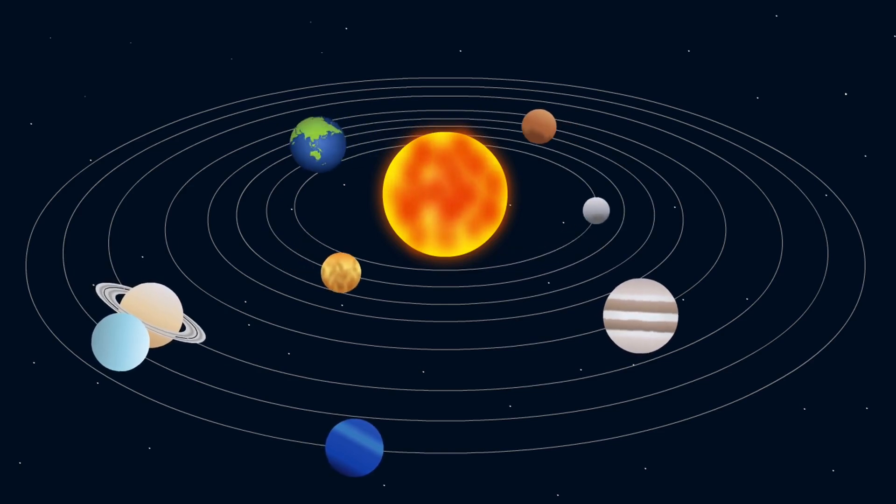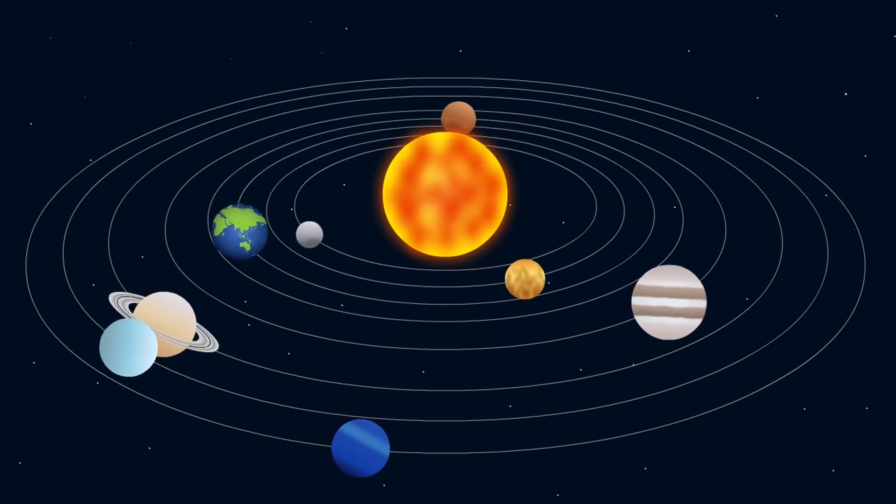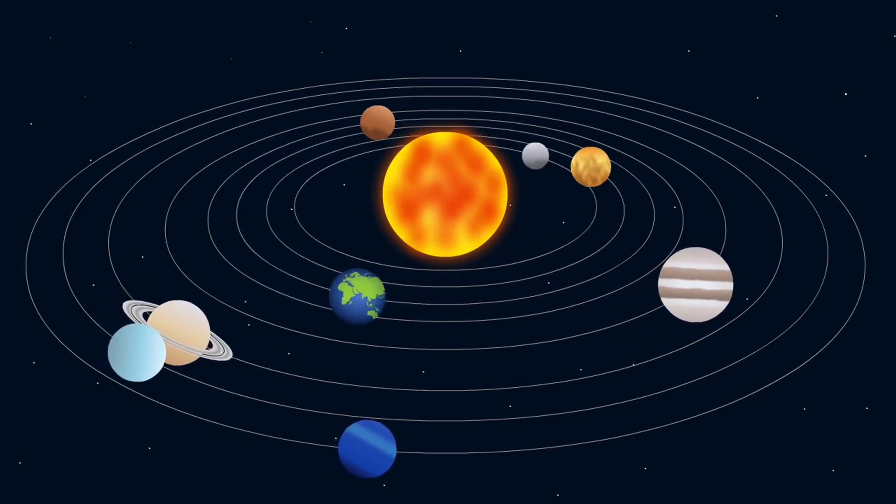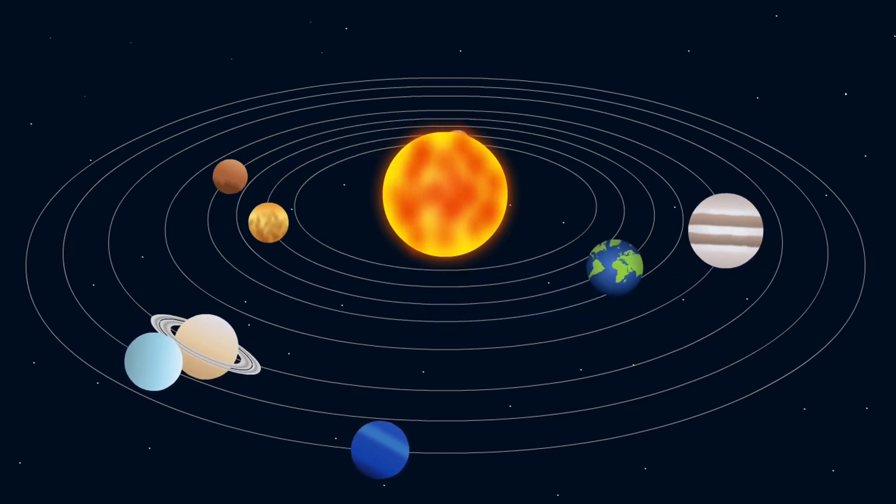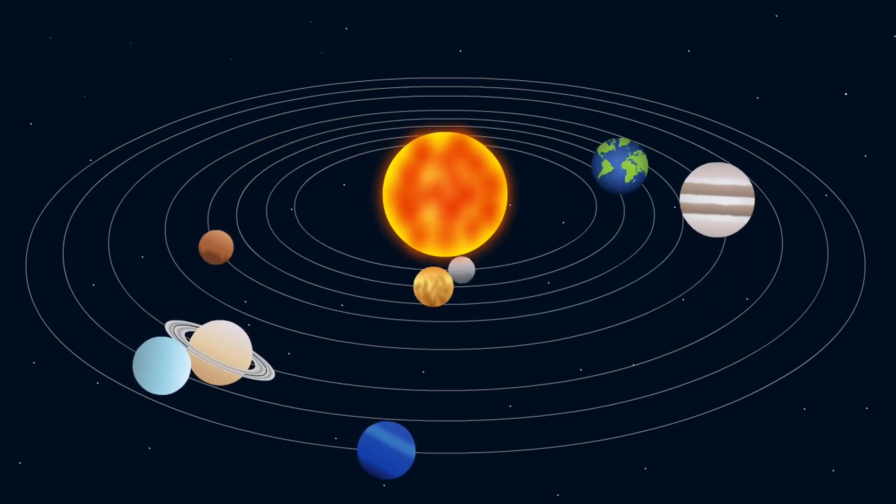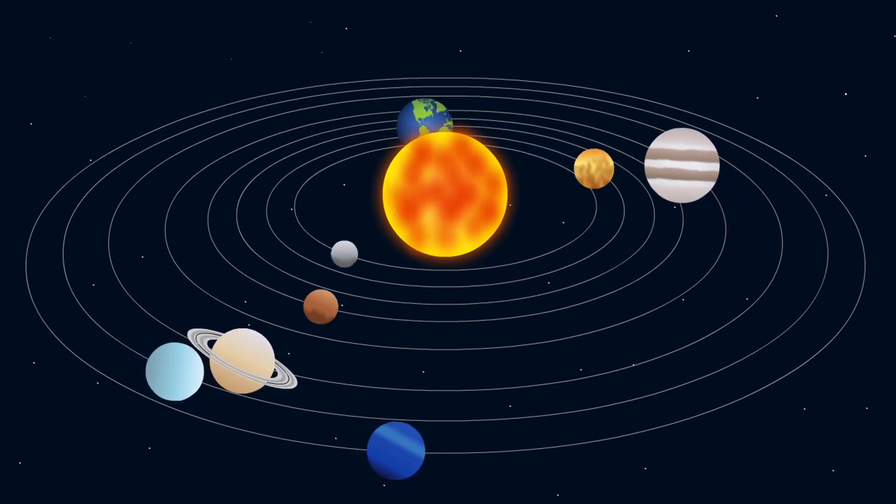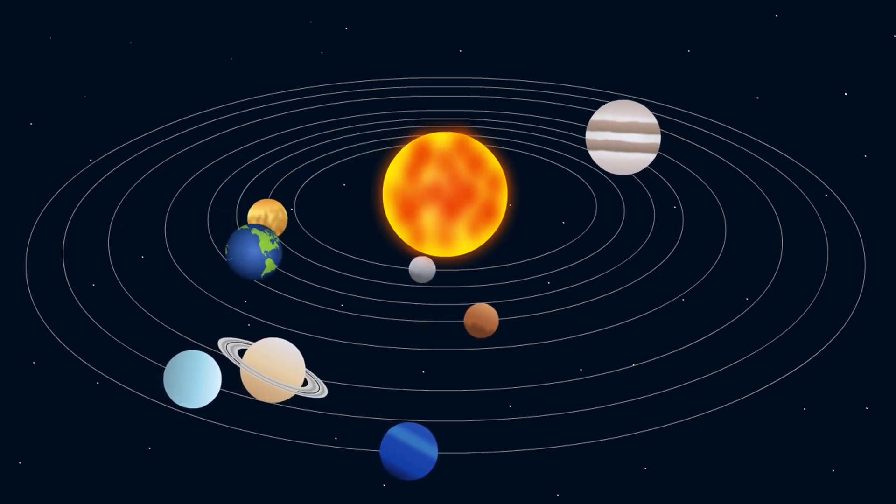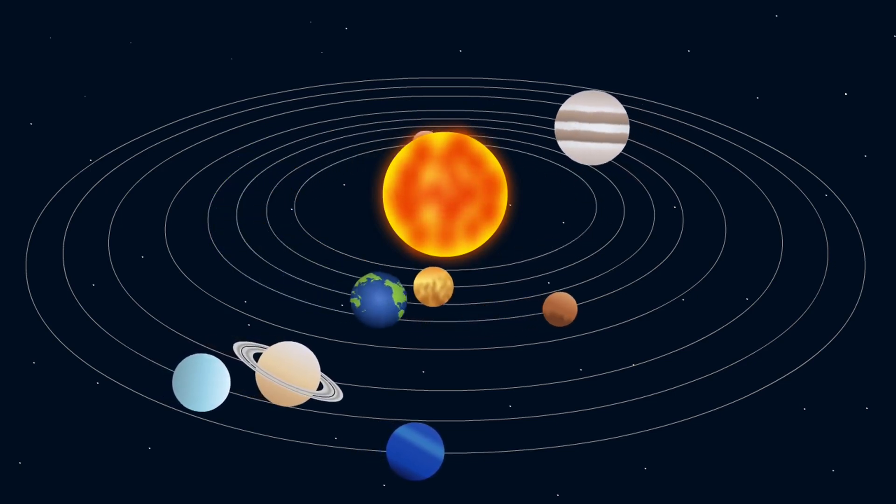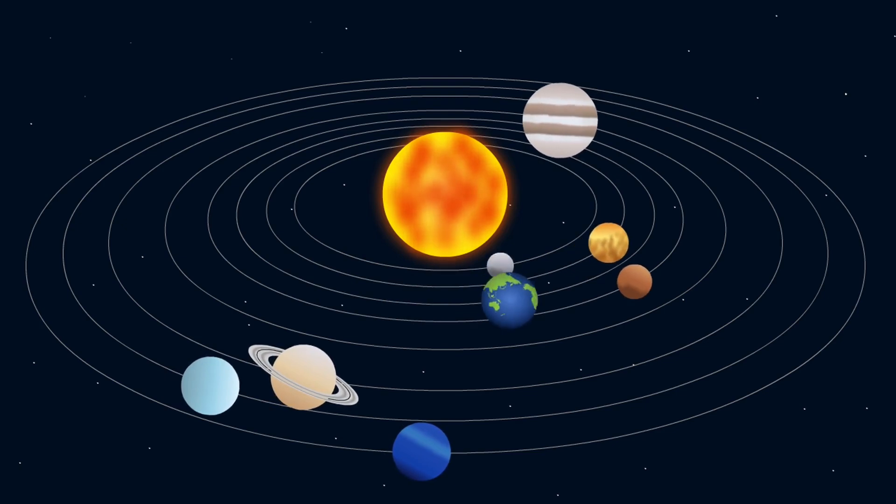The planet has a bright and extensive system of rings composed mainly of ice particles with a small amount of rocky debris and dust. At least 146 moons orbit the planet, of which 63 are officially named. These do not include the hundreds of moonlets in the rings.